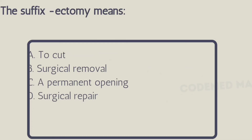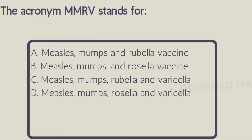Next question: the suffix '-ectomy' means — Option A: to cut, Option B: surgical removal, Option C: permanent opening, Option D: surgical repair. The right answer is Option B, surgical removal. Next question: the acronym MMRV stands for — the right answer is measles, mumps, rubella, and varicella, that is Option C.